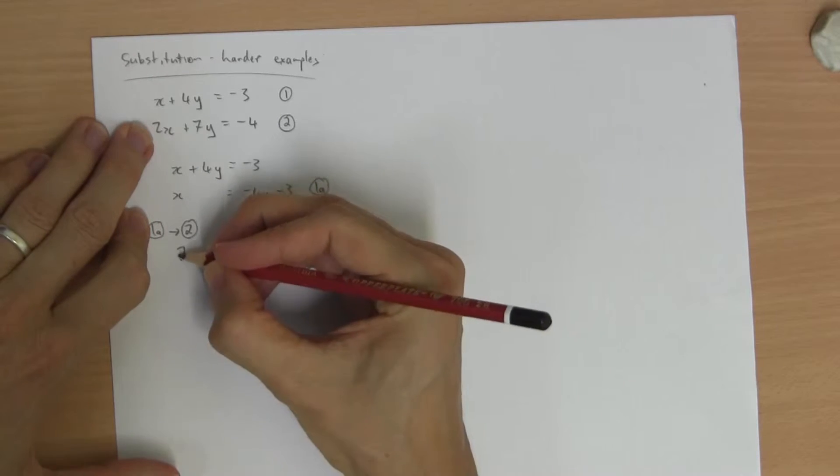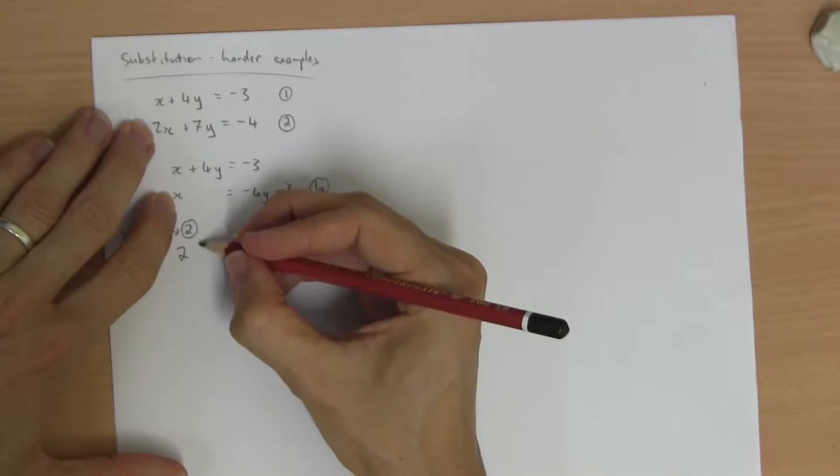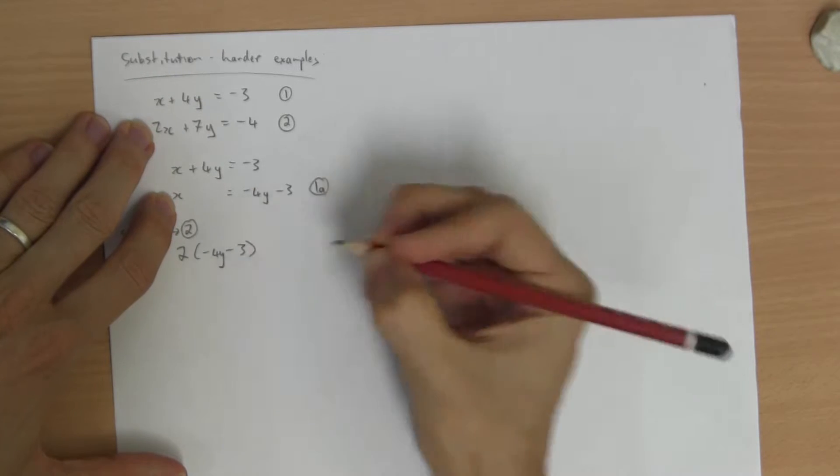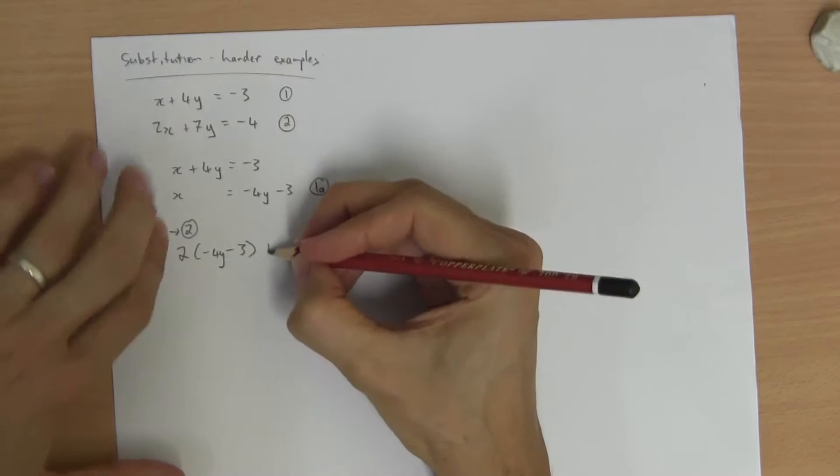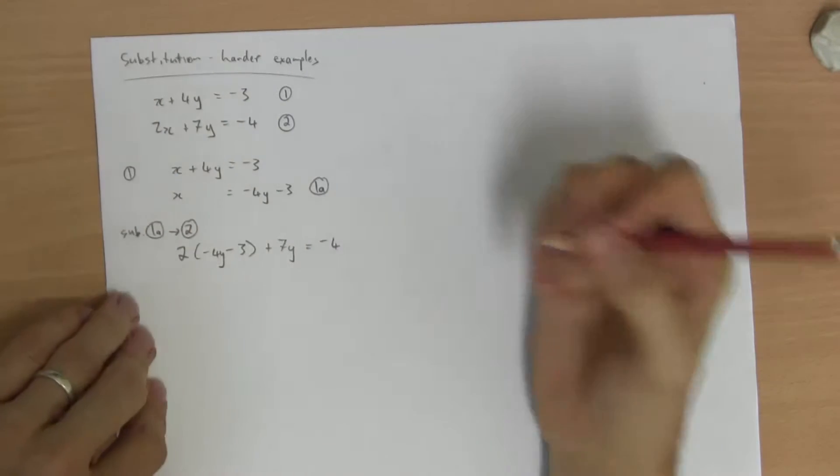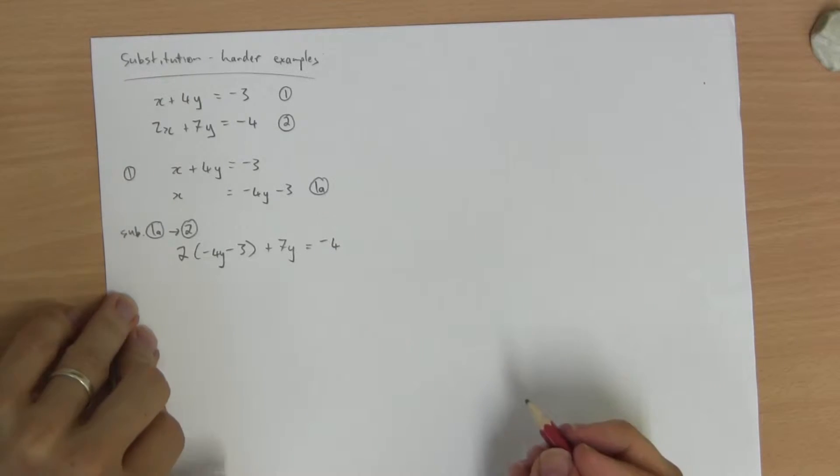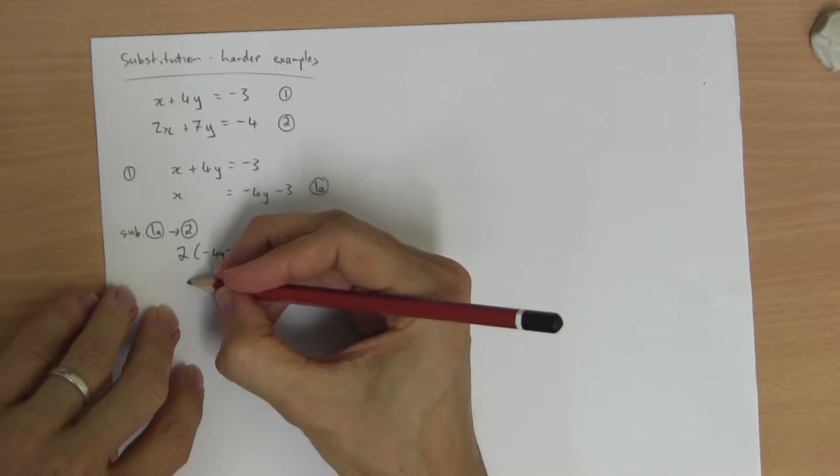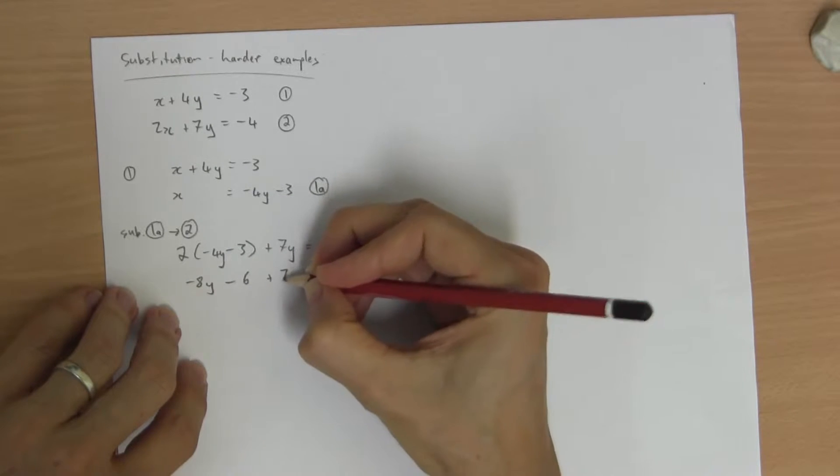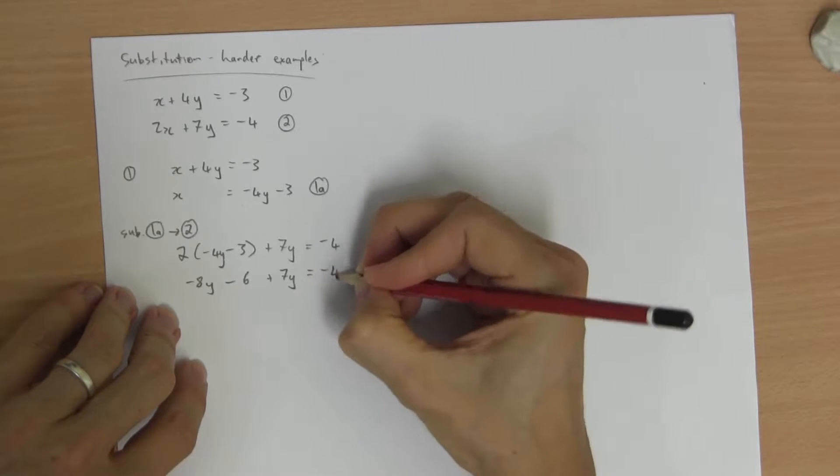Equation 2 says 2 times x, negative 4y minus 3, plus 7y equals negative 4. Now, being very careful of the negatives, let's solve it. So negative 8y minus 6 plus 7y is negative 4.